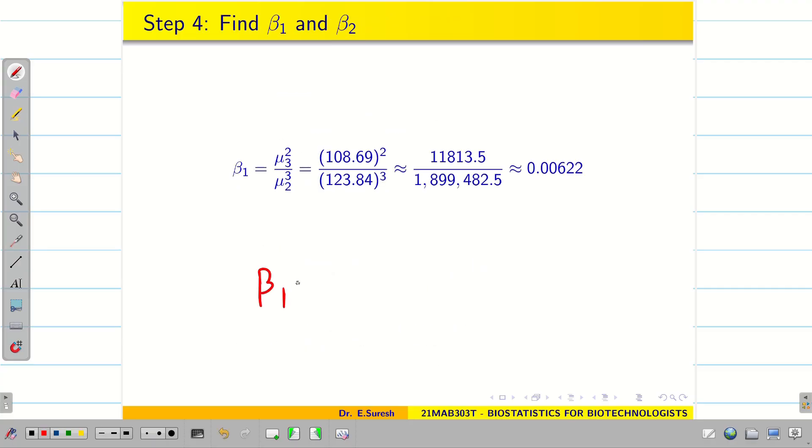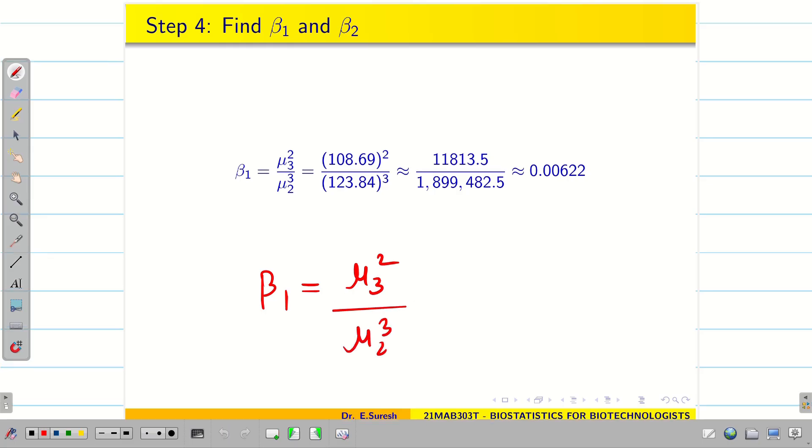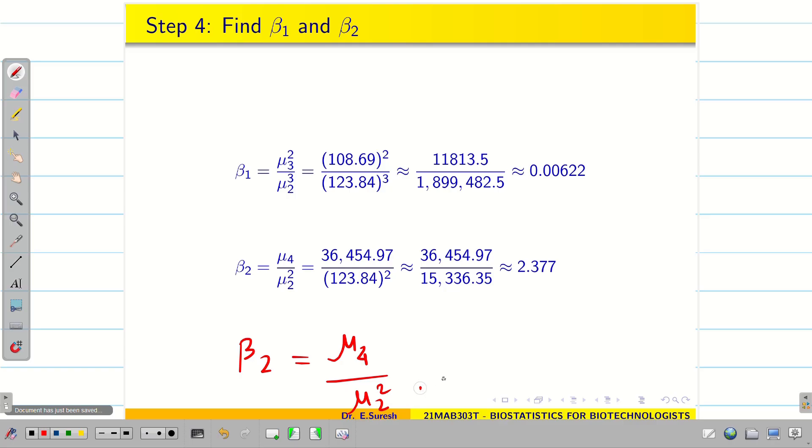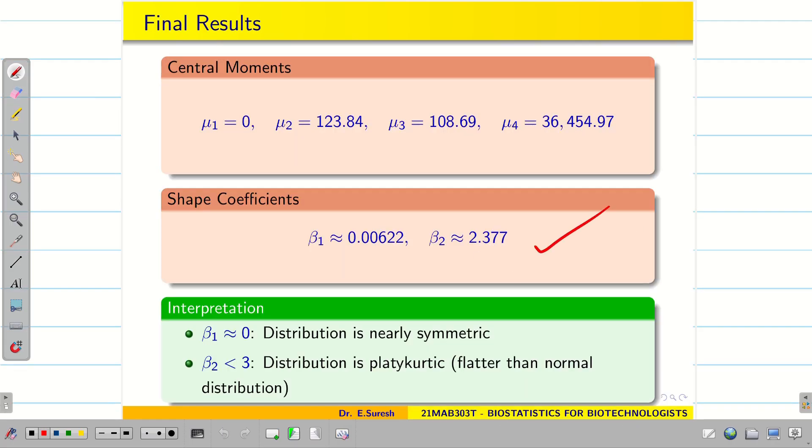And finally we have to find beta 1. That is mu 3 square divided by mu 2 cube. Substitute the values. And find the answer. Similarly we can do for beta 2, that is mu 4 divided by mu 2 square. Once this is done, write all the content. So beta 1 is almost 0. It is not exactly 0. So it is nearly symmetric. Beta 2 is 2.337. So we say it is platykurtic.